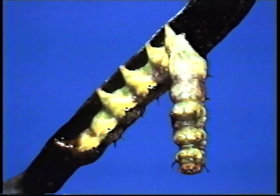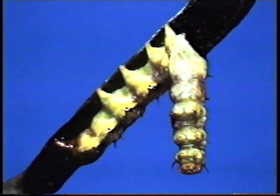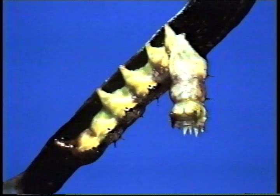Caterpillars are sometimes killed by a virus called nuclear polyhydrosis virus, or NPV. Infected caterpillars feed less, become sluggish, and die in five to twelve days. Dead caterpillars hang from leaf tips and are easily broken open, spilling virus-contaminated liquid onto leaves, which other caterpillars contact.